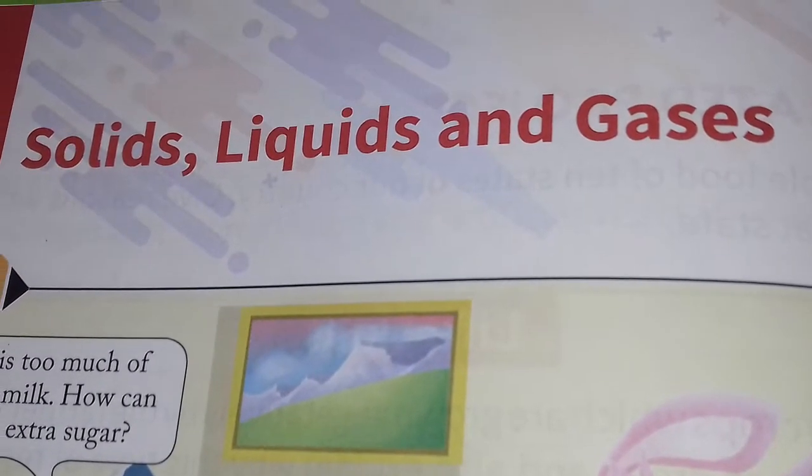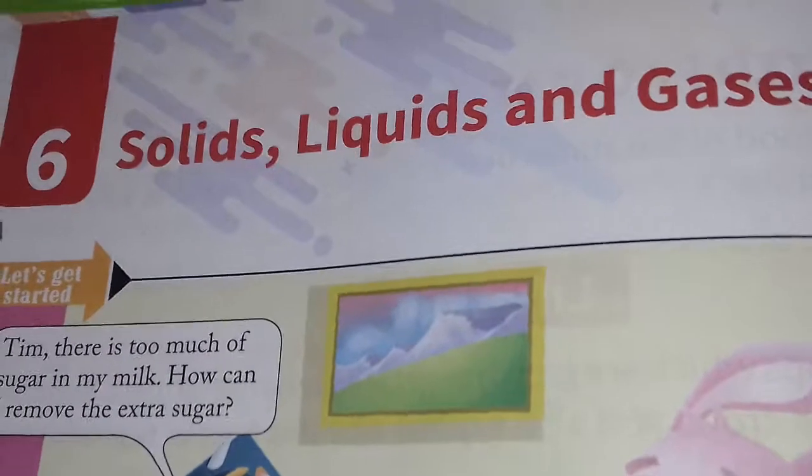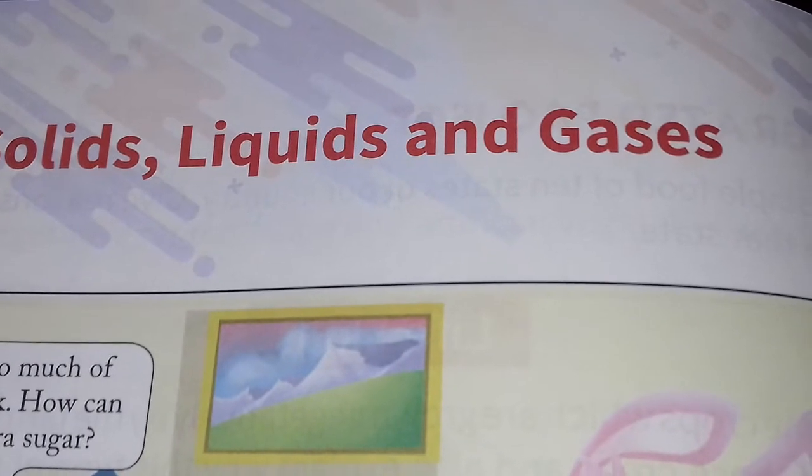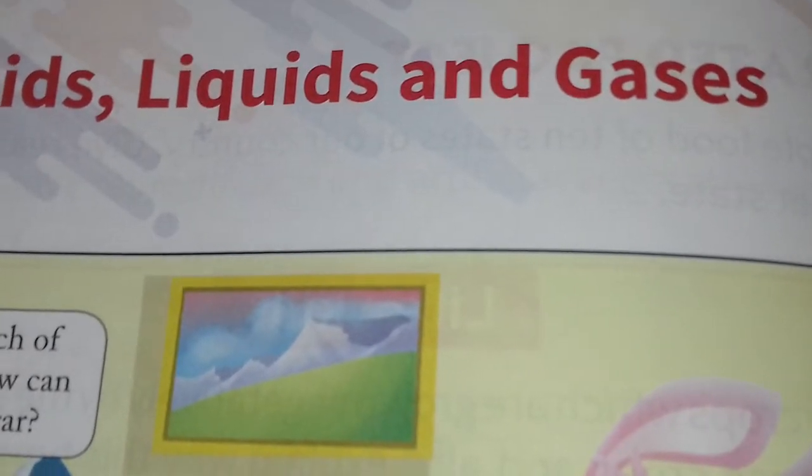Matter is made up of tiny particles called atoms. When two or more atoms combine they form a molecule. A molecule is the smallest unit of substance that has all the properties of that substance. The molecules of a substance are different from another substance — for example, sugar molecules are completely different from the molecules of milk, because molecules of different substances are arranged differently.